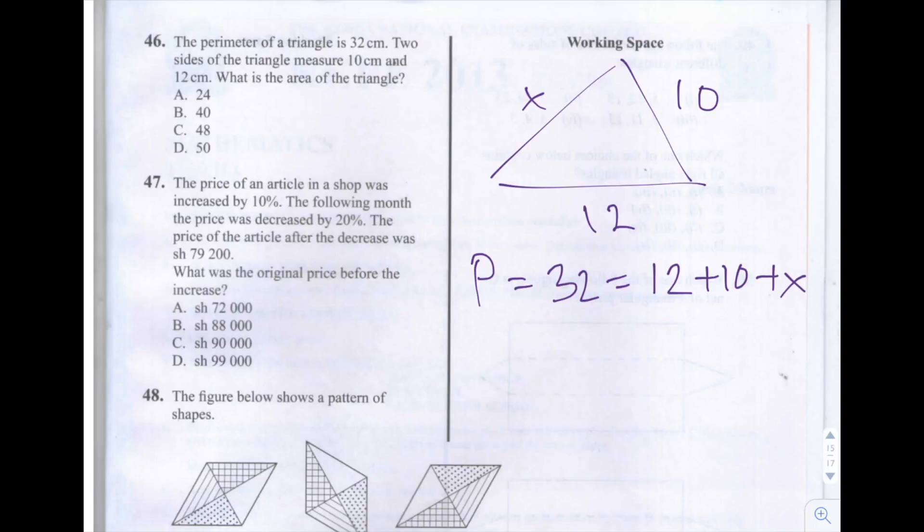And that P is also equal to 12, which is the length of one of the sides, plus 10, the length of another one of the sides, plus X, this unknown value, which is the third side that we don't know of the triangle.